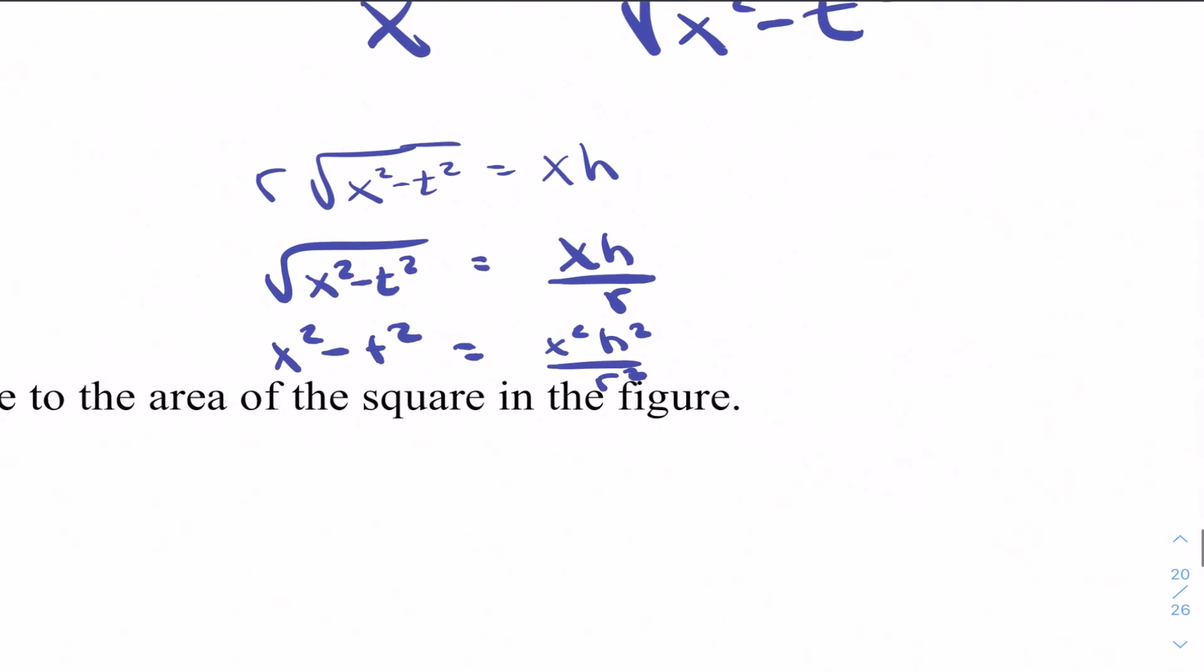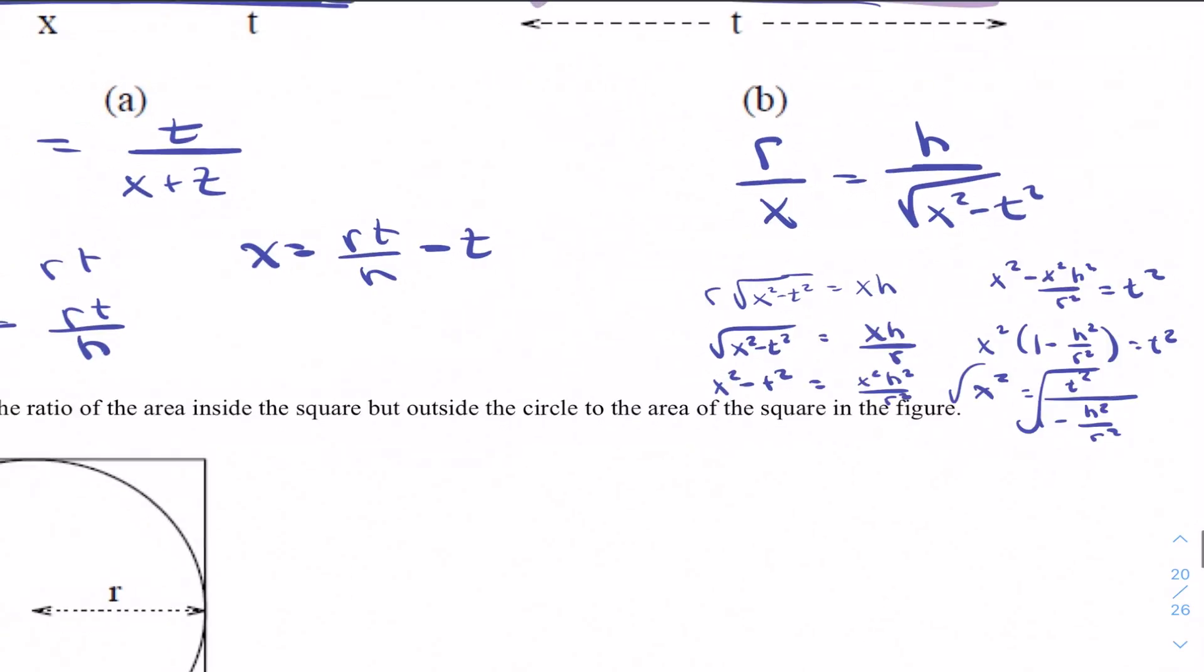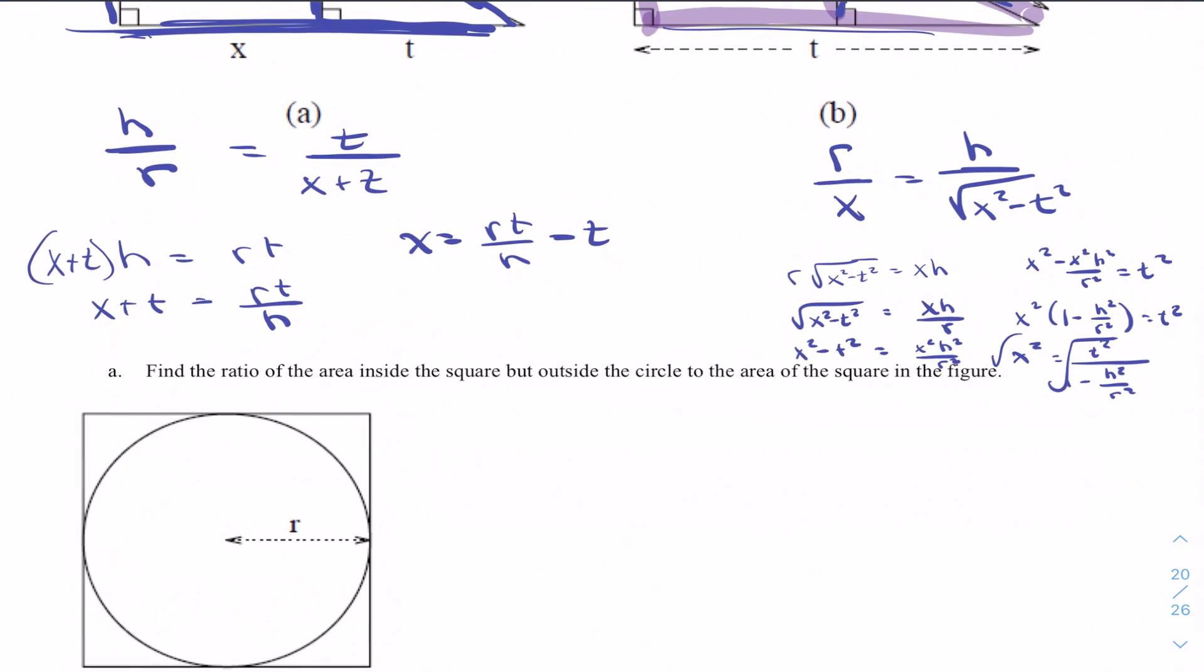We have to get everything that has an x on the same side. So we'd have x squared minus x squared h squared over r squared equals t squared. GCF of those two is an x squared term. So we'd be left with one minus h squared over r squared equals t squared. We divide both sides, x squared is equal to t squared over one minus h squared over r squared. And we just take the square root of both of those. So you can see it looks simple, but then we can get much more complicated much faster.